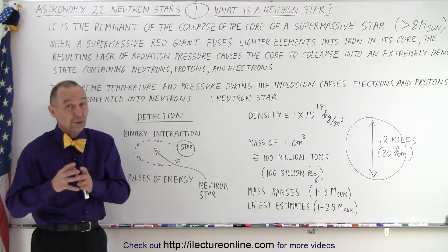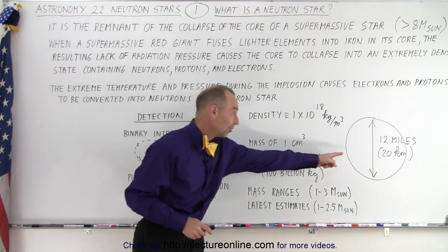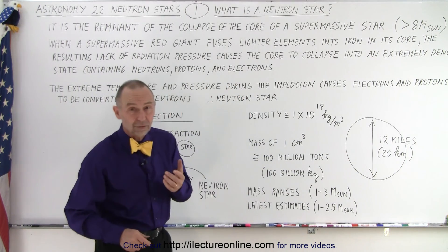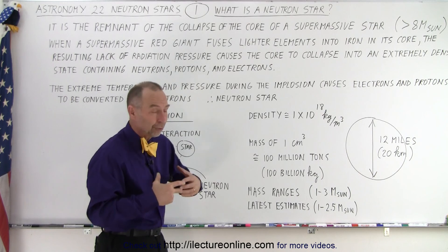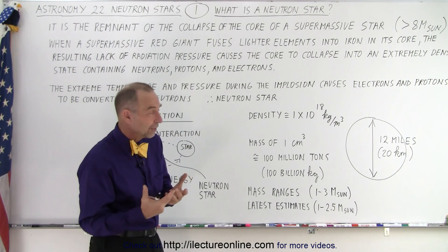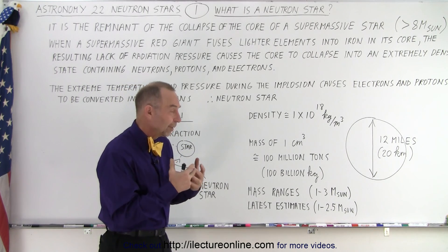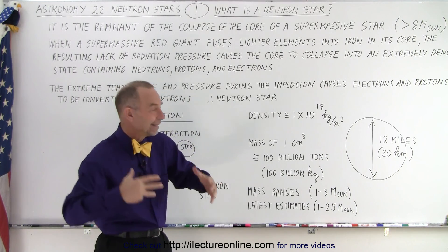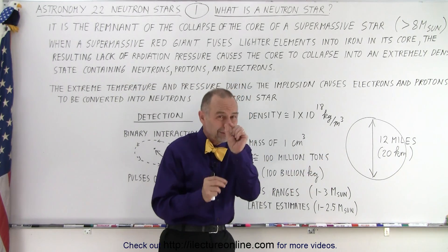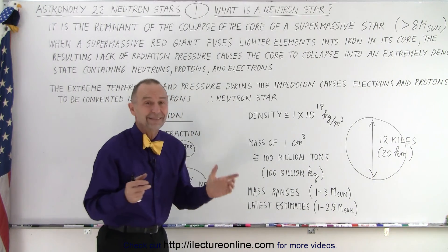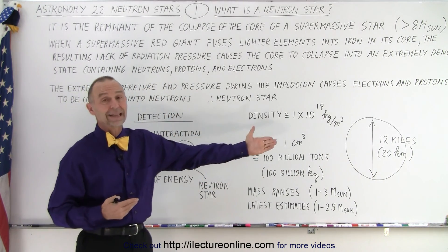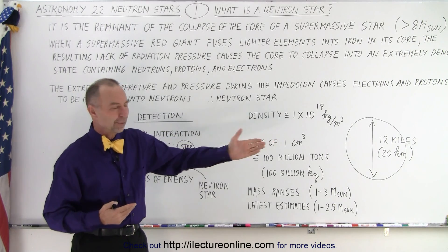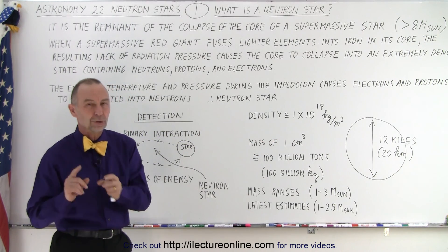Now, how do we detect them? How do we know they're there? Imagine trying to see something like this that doesn't potentially put out a lot of visual light because it's so tiny, and of course, there's no nuclear fusion taking place. Yes, the visible light that we would see would simply be from the remaining heat inside the neutron star, but since it's so tiny, you really can't see it. We can't see planets that reflect the light from their sun. We certainly can't see neutron stars, at least, from a visual perspective.